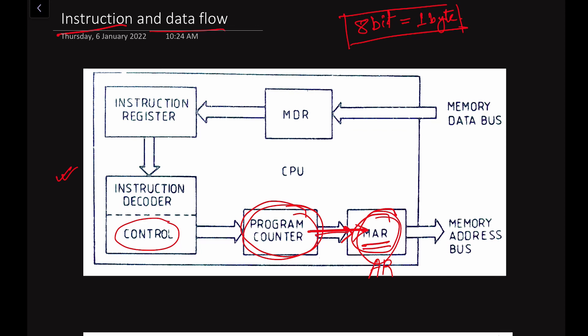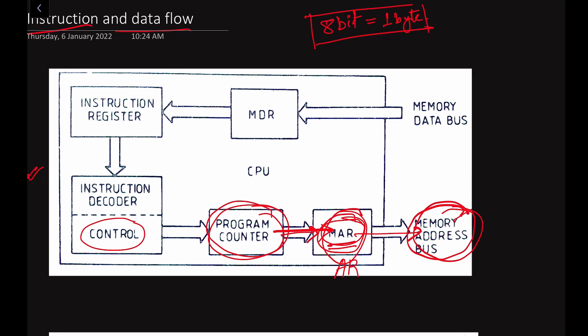The MAR takes the address from the program counter and goes to that memory address. The content of the MAR is transferred to the memory through the address bus. You can see here — this is the address bus, and through this address bus, the content will be transferred to the memory. Whatever the memory address is, it will be decoded by the decoding unit of the memory. By sending certain control signals, the microprocessor informs that it wants to read the content of that memory. The decoder circuit in the memory is activated through the control signals given by the microprocessor, and the memory understands what is to be done.